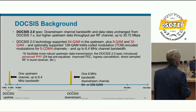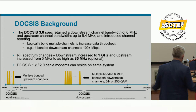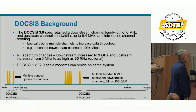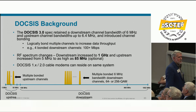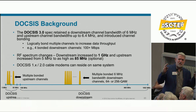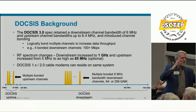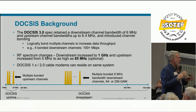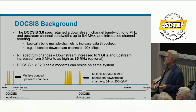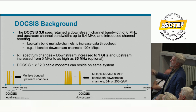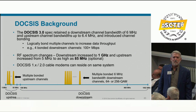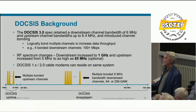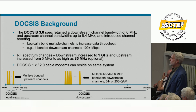The cable industry wanted more throughput, so DOCSIS 3.0 introduced channel bonding. With channel bonding, data is spread among multiple individual QAM channels logically — we're not gluing signals into one giant QAM signal. The RF spectrum was increased to 1 GHz in the forward path and up to 85 MHz optionally in the return path. Four bonded downstream channels might produce usable data capacity in excess of 100 Mbps. Backwards compatibility has been an important part of DOCSIS, continuing through DOCSIS 3.1.